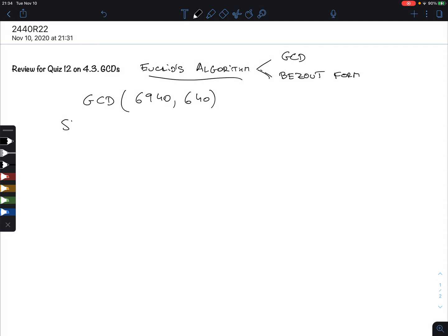Step one is the forward step. You divide the biggest by the smallest. So 6940 divided by 640, that's 10.10 and a bit. So 10 times would be 6400, and what's missing is 540. That's the remainder.